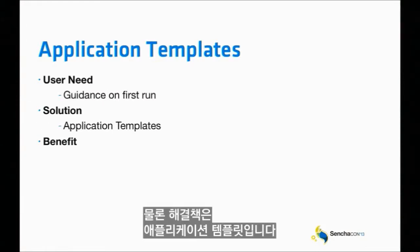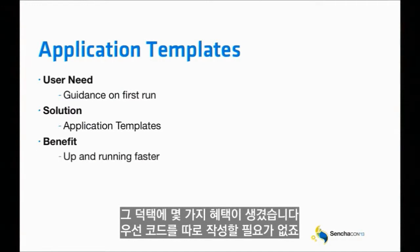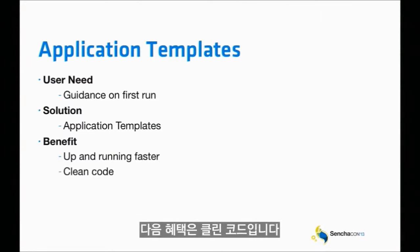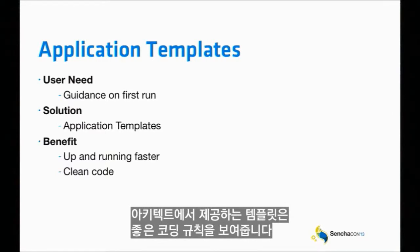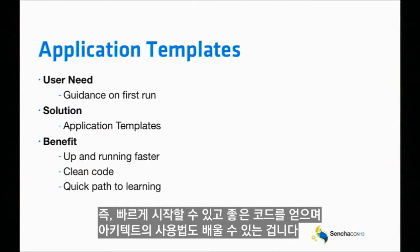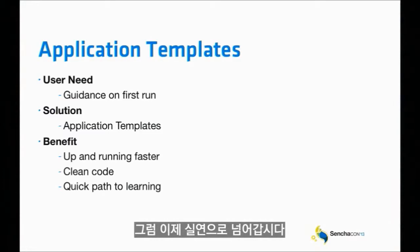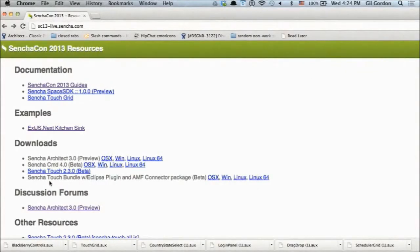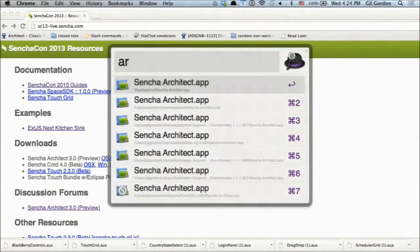Our solution is application templates, and there are a few benefits. First, if you don't have to write the code — we write it for you — you'll be up and running faster. Second, the templates demonstrate good coding practices. Third, if you're unfamiliar with Architect and the frameworks, you get up and running faster, get good code, and it also helps you learn how to use Architect.